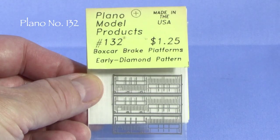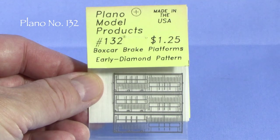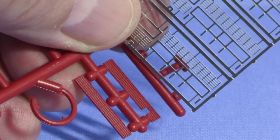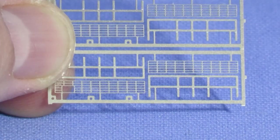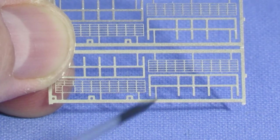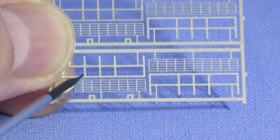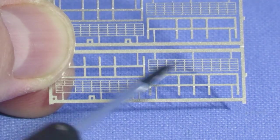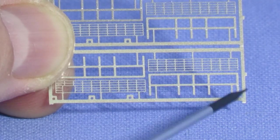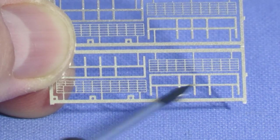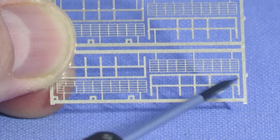This is Plano Part 132, which are crossover platforms that I want to use on the boxcar. These are pretty close in size to the plastic parts that came with the car, but I think they look a lot better. The Plano part actually has several of these - there's a B-end crossover platform which has a little hole in it for the brake chain, and then there's the A-end crossover platform which is plain, and then there's also these supports. Since this car already has supports, I'm not going to use the supports. I'm just going to use the platform itself.